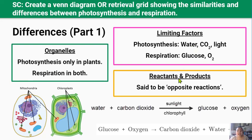Difference three — reactants and products: although photosynthesis and respiration use many of the same molecules, these molecules play very different roles. In photosynthesis, carbon dioxide and water are the reactants used to produce glucose and oxygen as products. In respiration, glucose and oxygen are the reactants used to create ATP, carbon dioxide, and water as products. This is why these processes are often said to be opposite of each other.